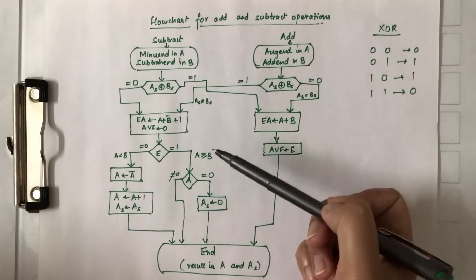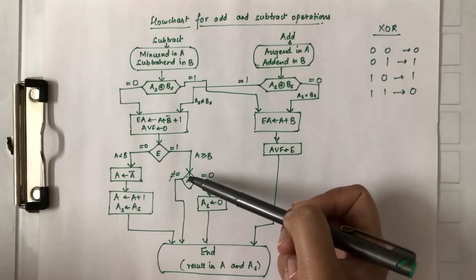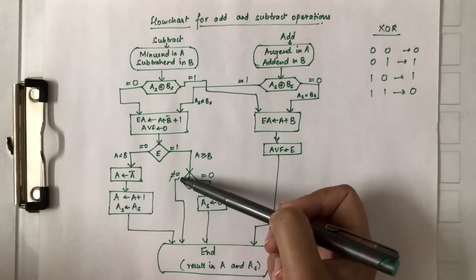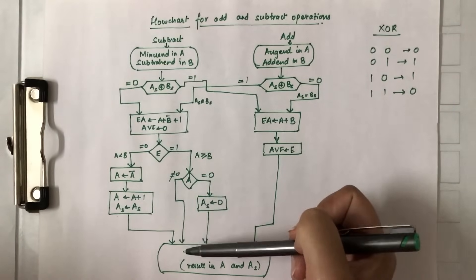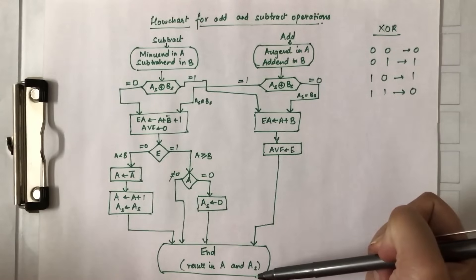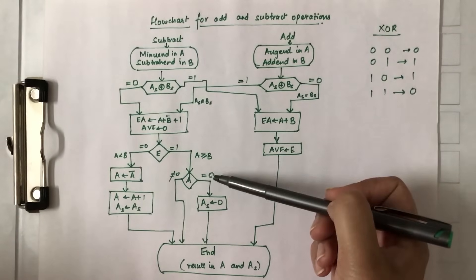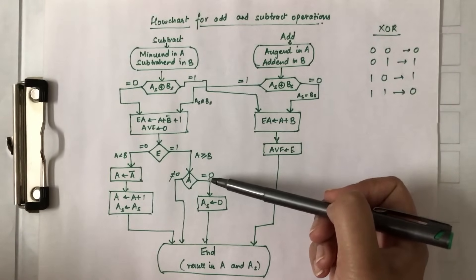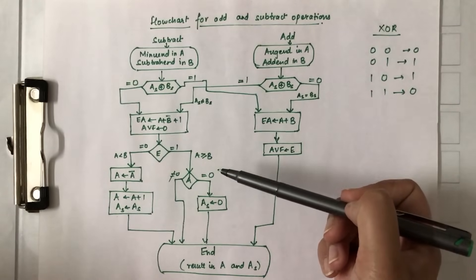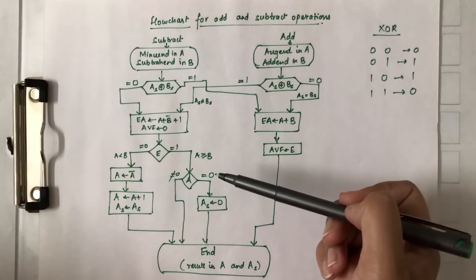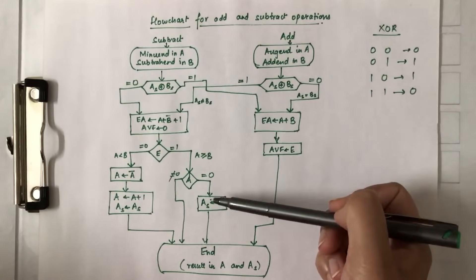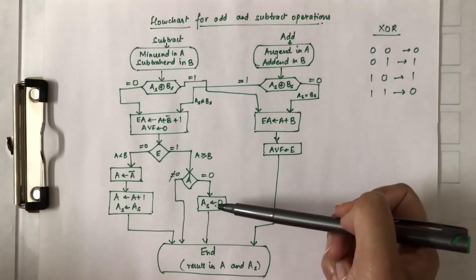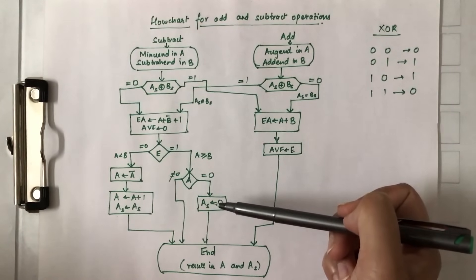In the case where A is greater than or equal to B — if it is greater than B, meaning if it is not zero — the result is already found and is already stored in A and As. In the other case, it can be equal to B; in that case the result will be zero, because A minus B where A equals B is zero, and the sign bit will be set to zero, resulting in a positive zero.